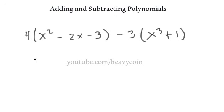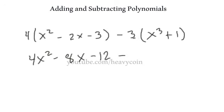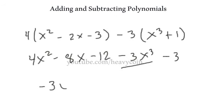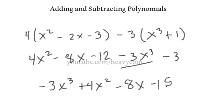Simplifying another expression: we multiply through to get 4x squared minus 8x minus 12, minus 3x cubed, minus 3. Writing in standard form with the largest exponent first: negative 3x cubed plus 4x squared minus 8x minus 15.